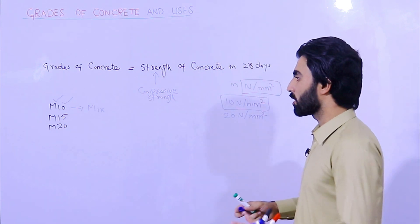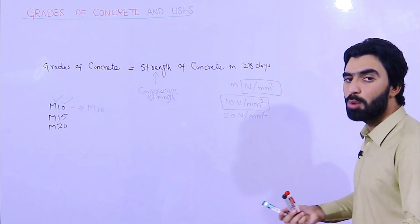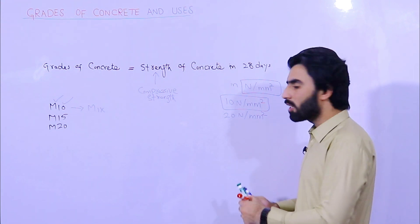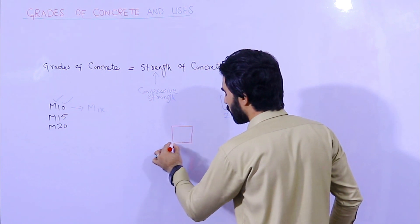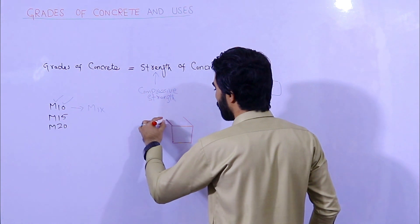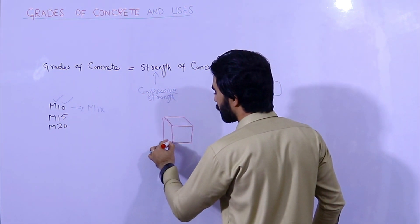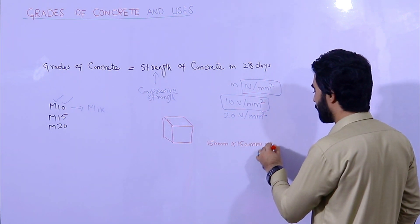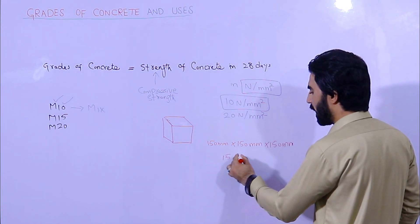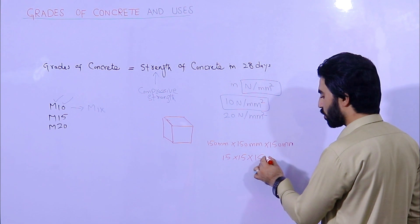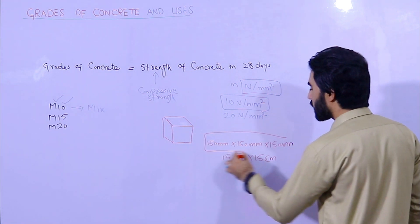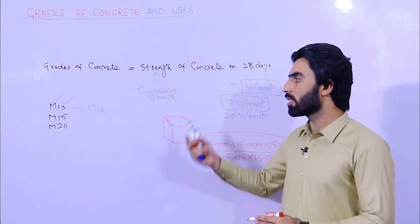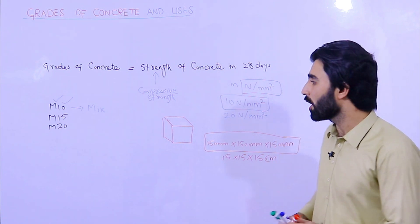To find the compressive strength, we need a compression machine — you can see a picture of that compression machine. We also need a concrete cube. The cube size used for the compression test should be 150mm × 150mm × 150mm, or 15cm × 15cm × 15cm. We place this cube inside the compression machine to find the strength — for example, for M15 or M20 grade concrete.